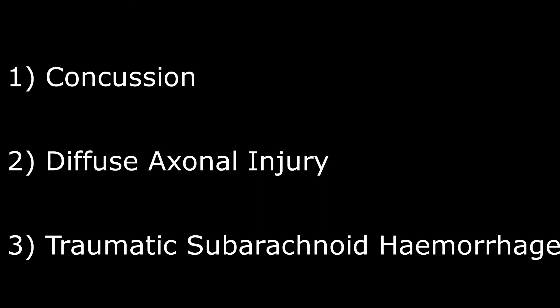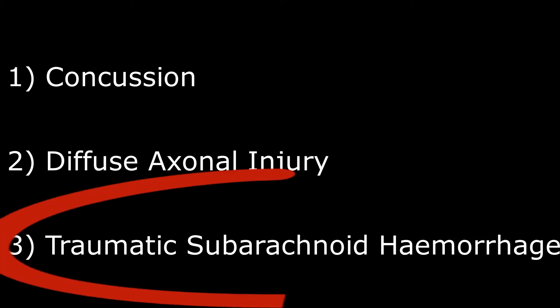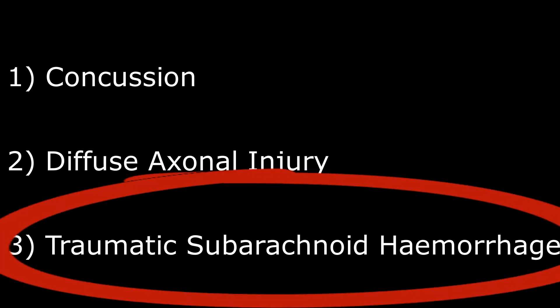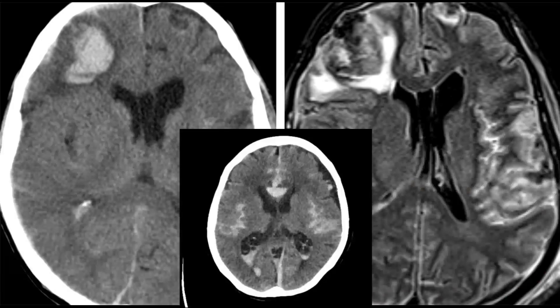Then you have traumatic subarachnoid hemorrhage, which has very high mortality. It is due to a tear of the small arteries within the brain. Fresh blood on CT and MRI is white in color, or hyper-intense.